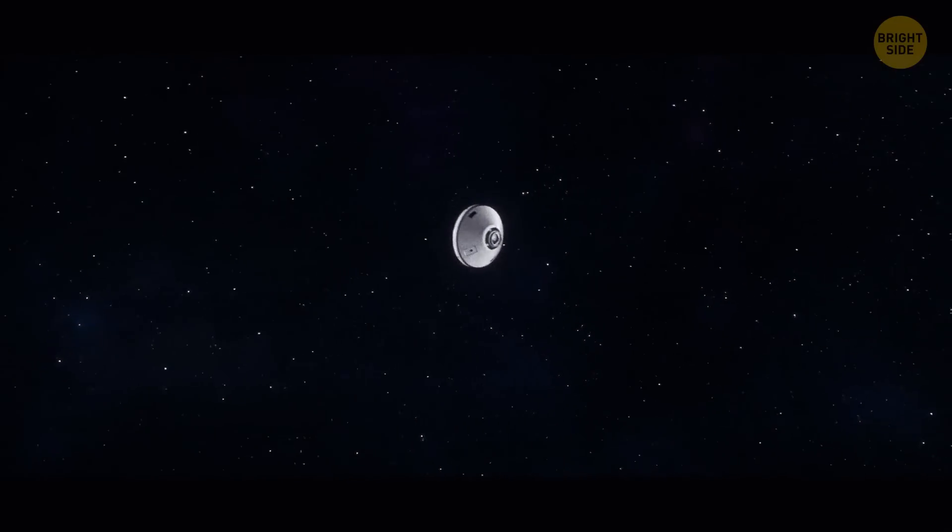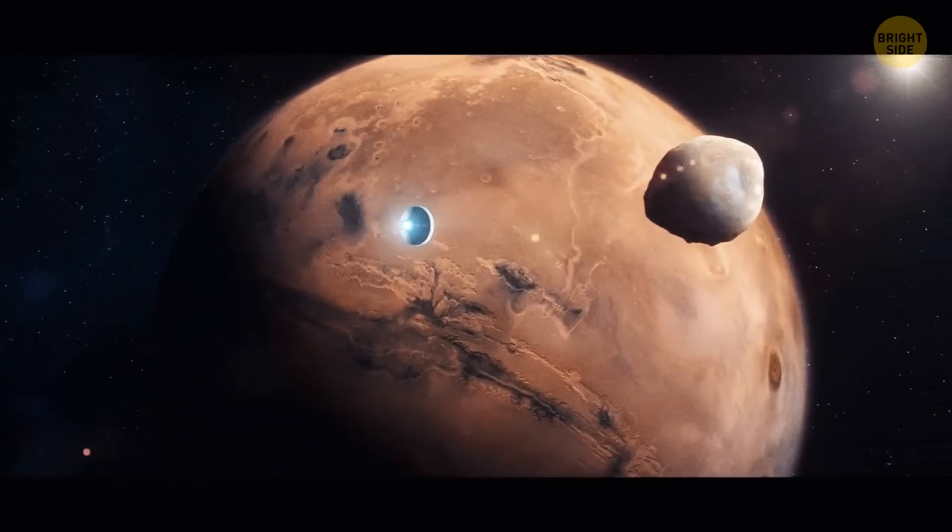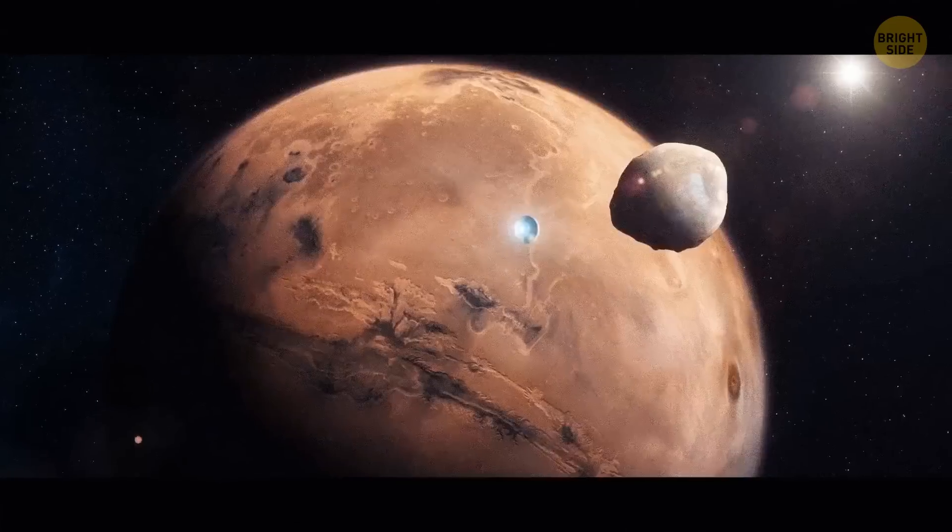Mars has two moons, Phobos and Deimos. In the next 30 to 50 million years, Mars' gravitational forces will tear Phobos apart, and it will likely result in the formation of a ring around the planet.